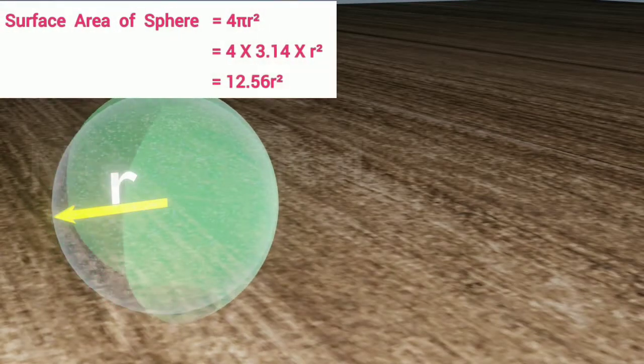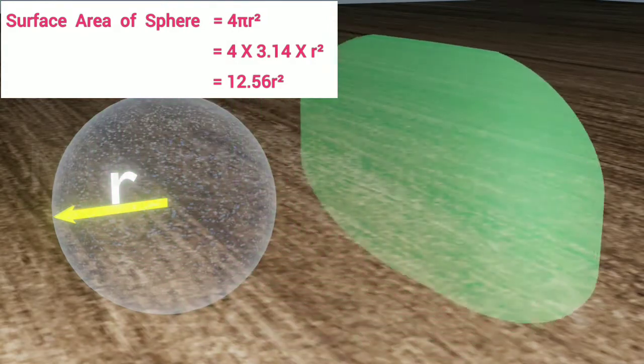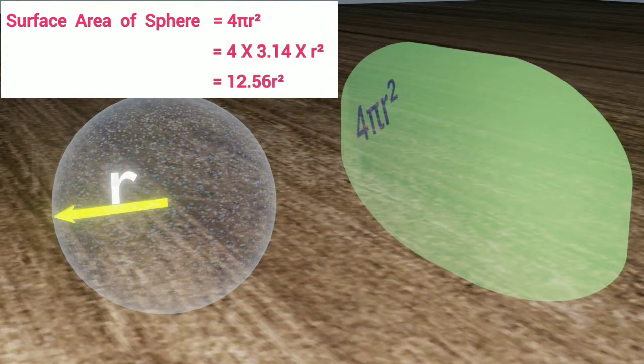Therefore, its surface area should be 4πR², or 12.56R², after putting value of π, which is approximately 3.14.